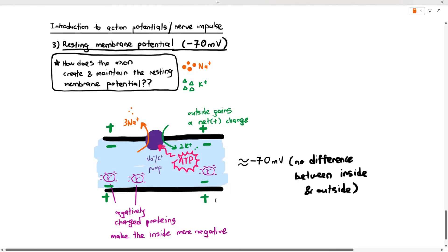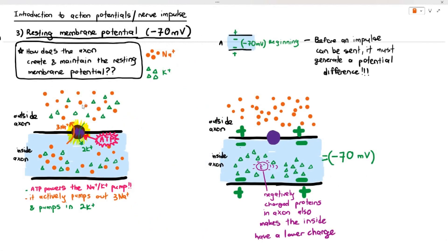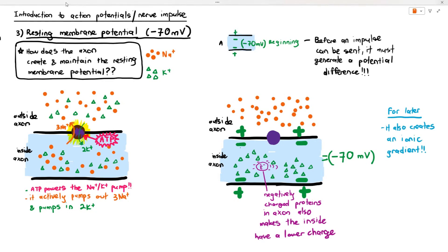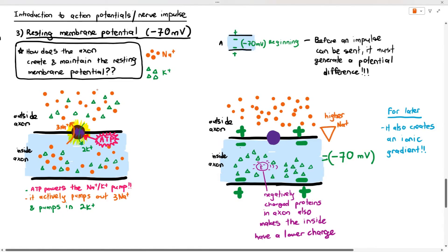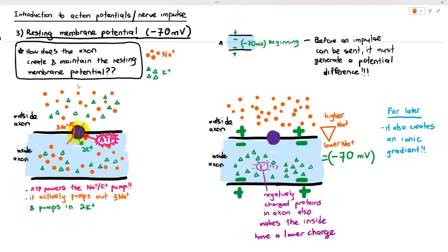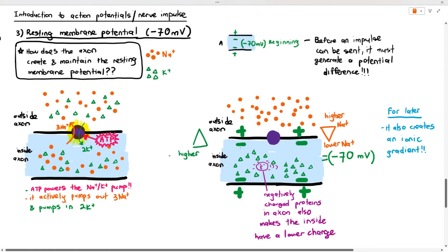With the help of the negatively charged proteins inside, the membrane potential becomes negative 70 millivolts. If a question asks how the resting membrane potential is created, you say: the sodium ion-potassium ion pump actively pumps out three sodium ions and pumps in two potassium ions, and negatively charged proteins make the inside more negative. When creating and maintaining the resting membrane potential, they also create an ionic gradient — sodium ion concentration is higher outside and lower inside, while potassium ion concentration is higher inside and lower outside. This is important for the next part.